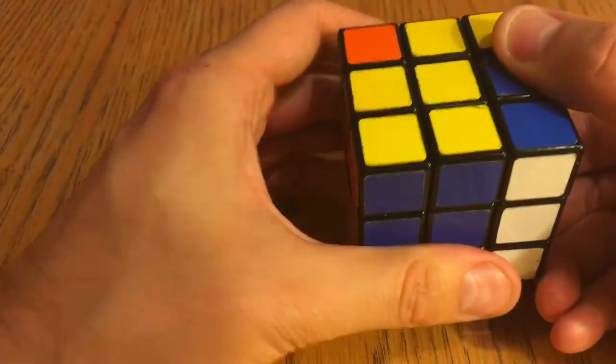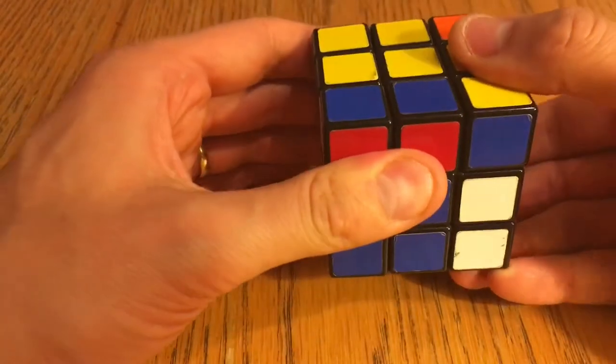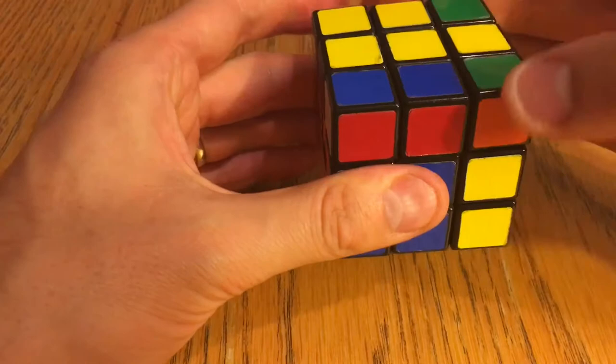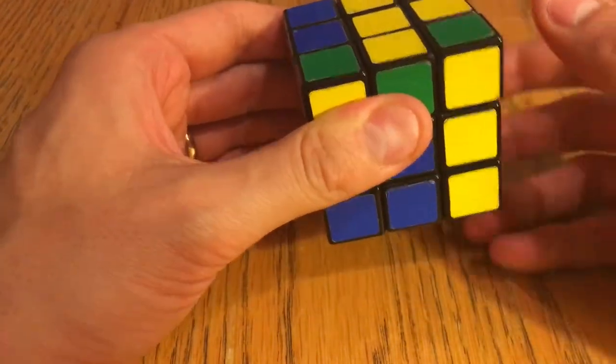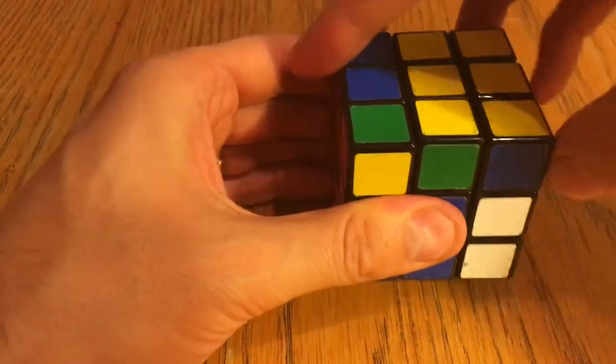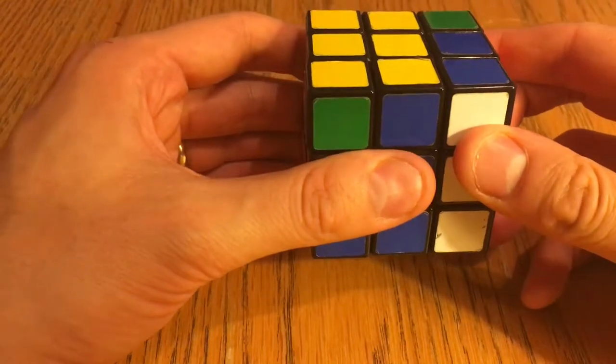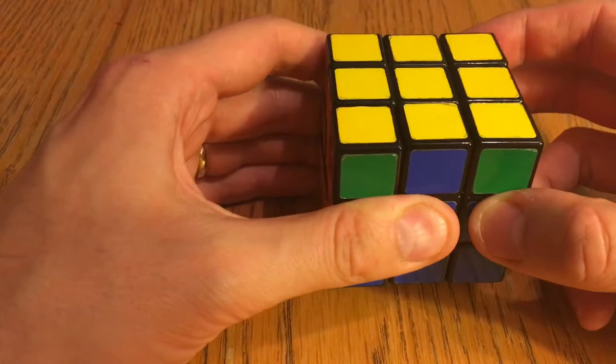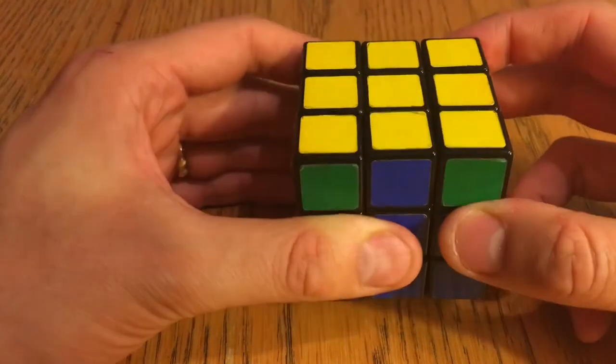A right turn clockwise, a top turn clockwise, right turn anti-clockwise, a top turn clockwise, a right turn clockwise, and then a double top turn followed by a right turn anti-clockwise, and that gives you the yellow face.